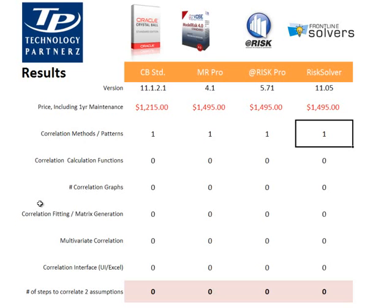The various dimensions on which we are going to compare these packages are: the number of correlation methods or patterns available in the package, the presence or availability of correlation calculation functions, how many ways we can visualize correlation and the graphing capabilities, correlation fitting and matrix generation — so if we have a set of data, can we extract a correlation matrix — multivariate correlation, as well as how the correlation interface works within the package, whether correlations are embedded in the worksheet or accessible through a UI or a combination of both.